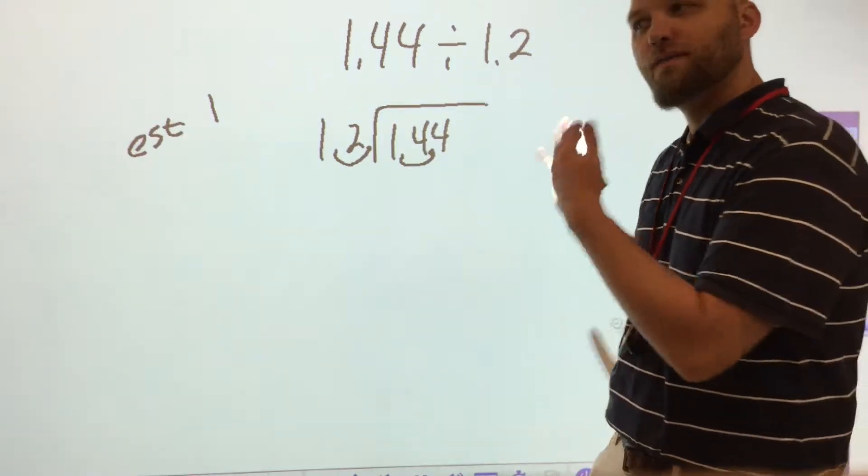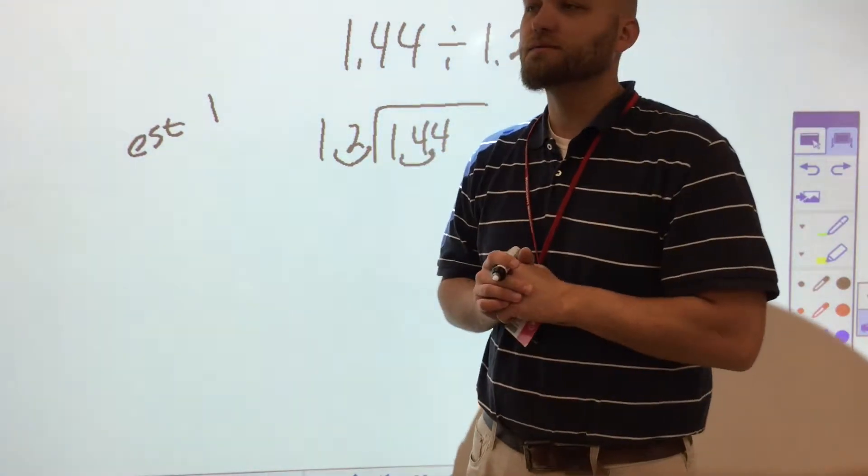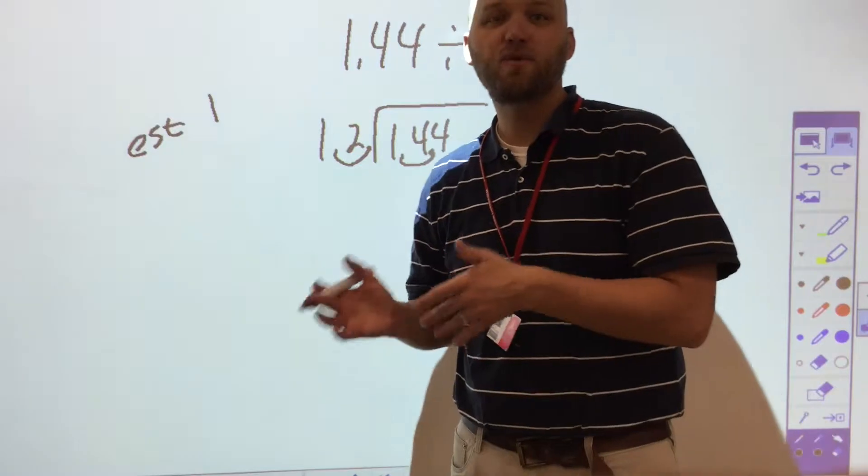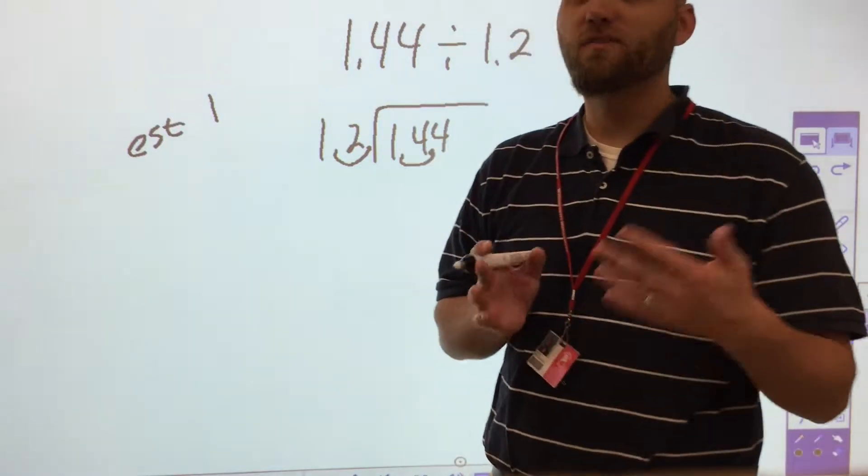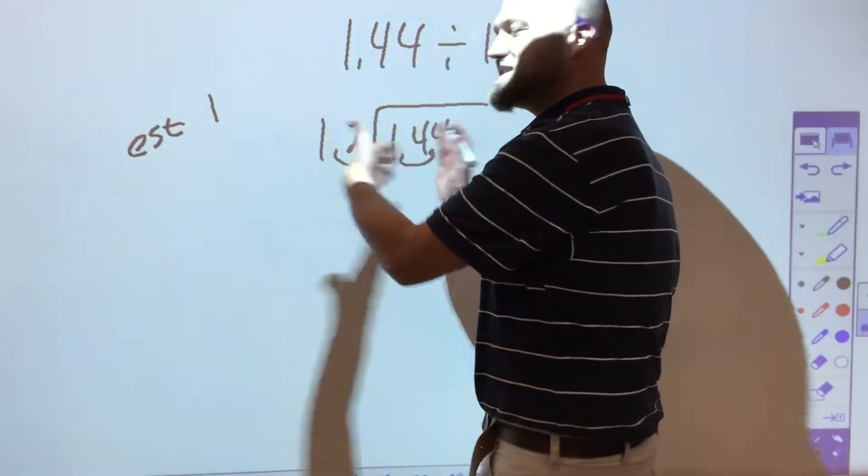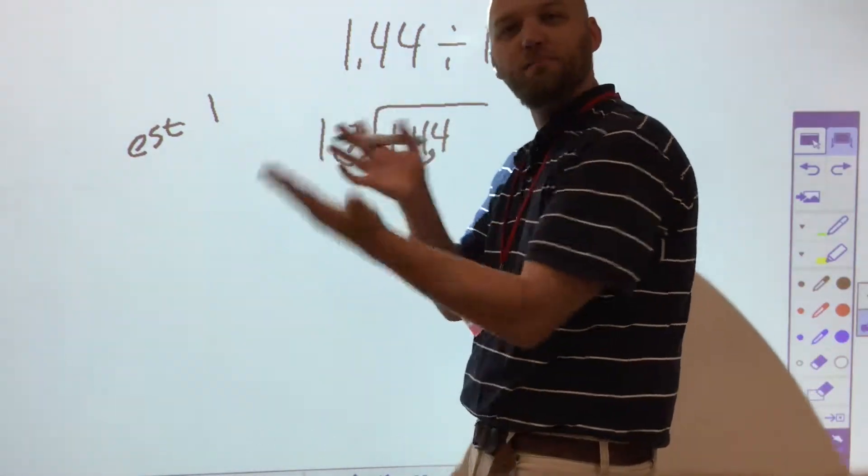So if you don't believe me why that works, case in point: 10 divided by 2 is 5. 100 divided by 20 is 5. 1,000 divided by 200 is 5. It doesn't matter the 0 placement as long as I've moved it in both numbers.